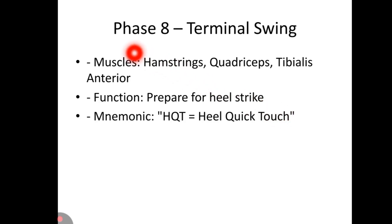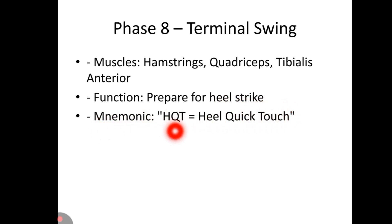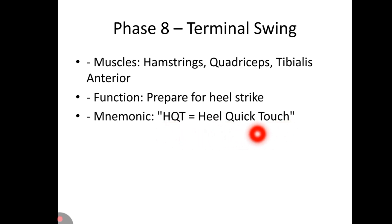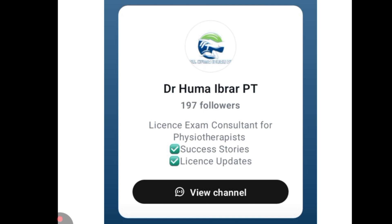Phase 8 is terminal swing. Muscles involved are hamstrings, quadriceps, and tibialis anterior. Their function is to prepare for heel strike. The mnemonic is 'HQT — Heel Quick Touch': H of Heel for hamstrings, Q of Quick for quadriceps, and T of Touch for tibialis anterior.